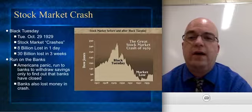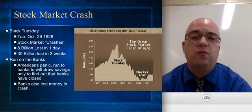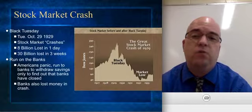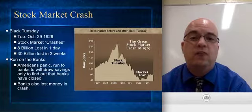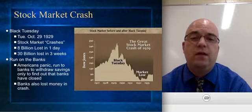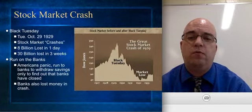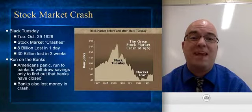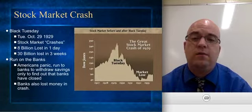On October 29th, 1929, known as Black Tuesday, the stock market crashed. About $8 billion was lost in just one single day of trading on Wall Street, and $30 billion was lost over three weeks. During the 1920s, a lot of stocks were overpriced and over-speculated — they weren't really worth the value they were credited for. When people started feeling they should cash out before stocks dropped, they began selling in large numbers, which caused a panic on Wall Street and triggered the stock market to collapse.